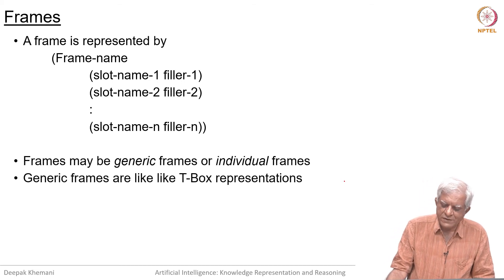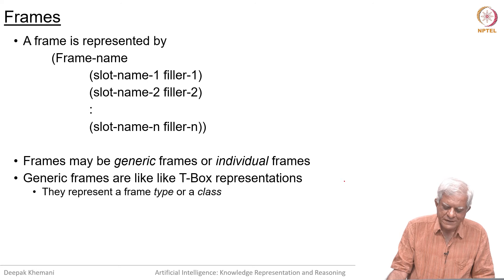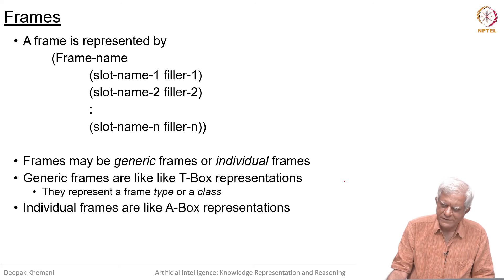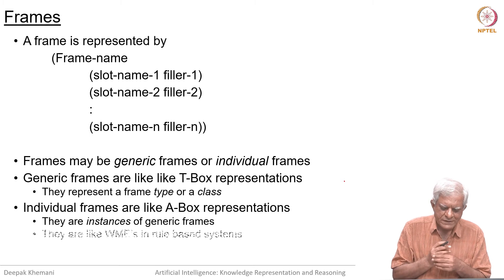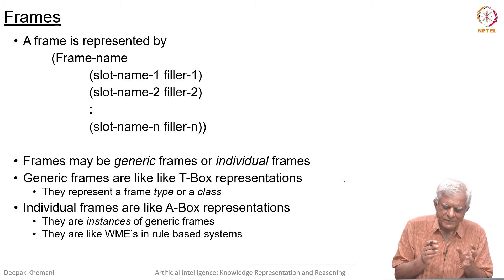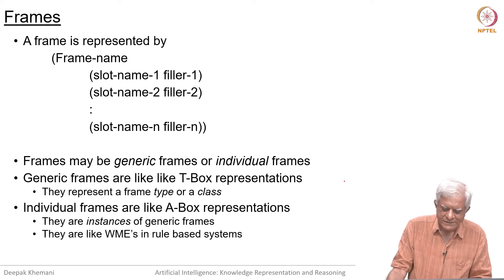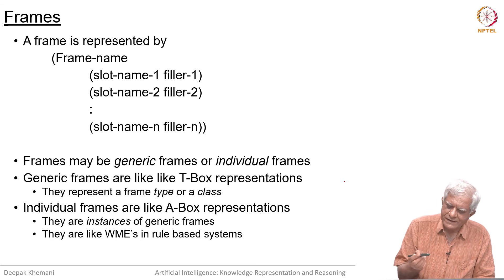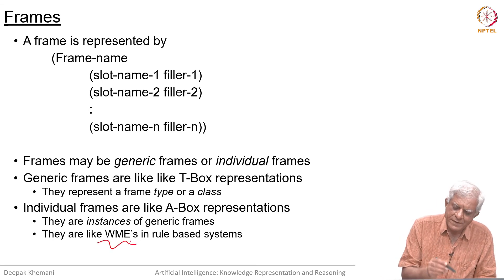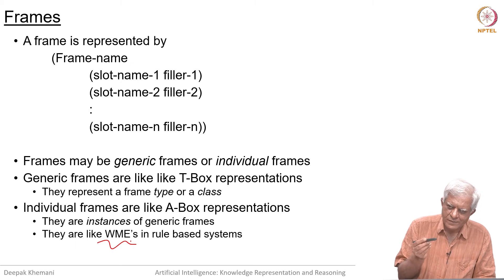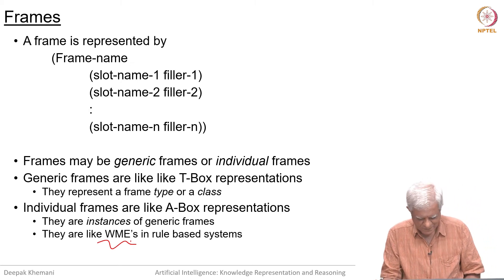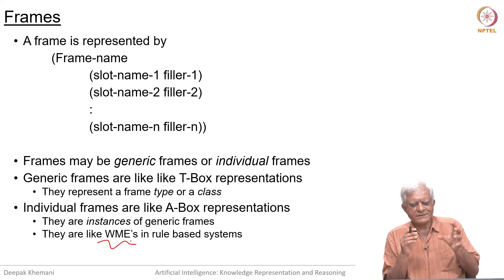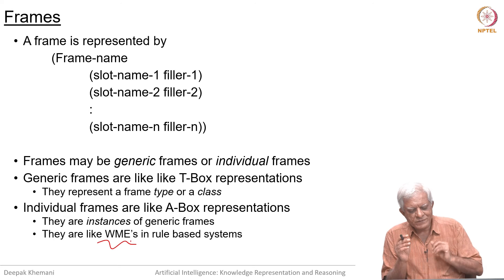Frames may be generic frames or individual frames. Generic frames are like T-box representations — we are not talking about specific individuals; they represent a frame type or a class. Individual frames are like A-box representations — they talk about individuals and are instances of generic frames. They are also like the working memory elements we saw when looking at rule-based systems, which had a similar structure: a class name followed by attribute-value pairs.